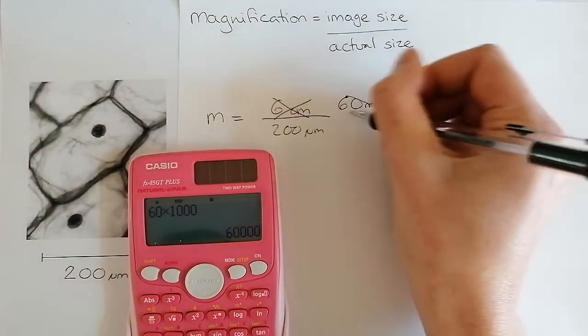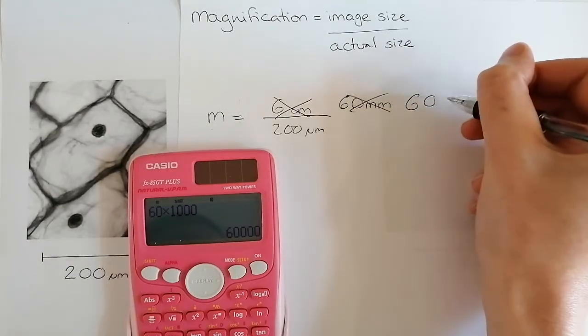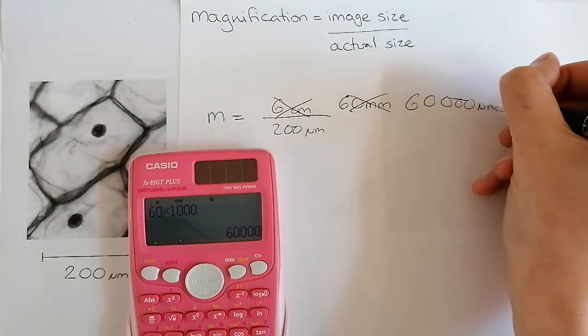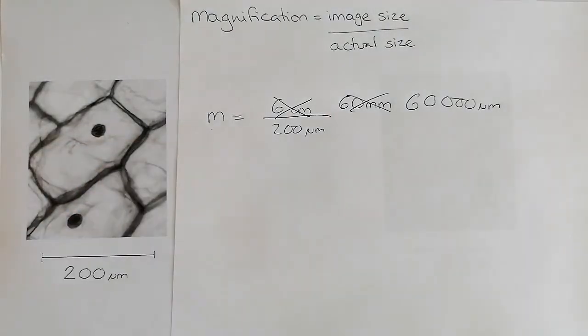So we're now getting 60,000 micrometers. And I'm now going to write that out neatly and do the rest of the calculation.